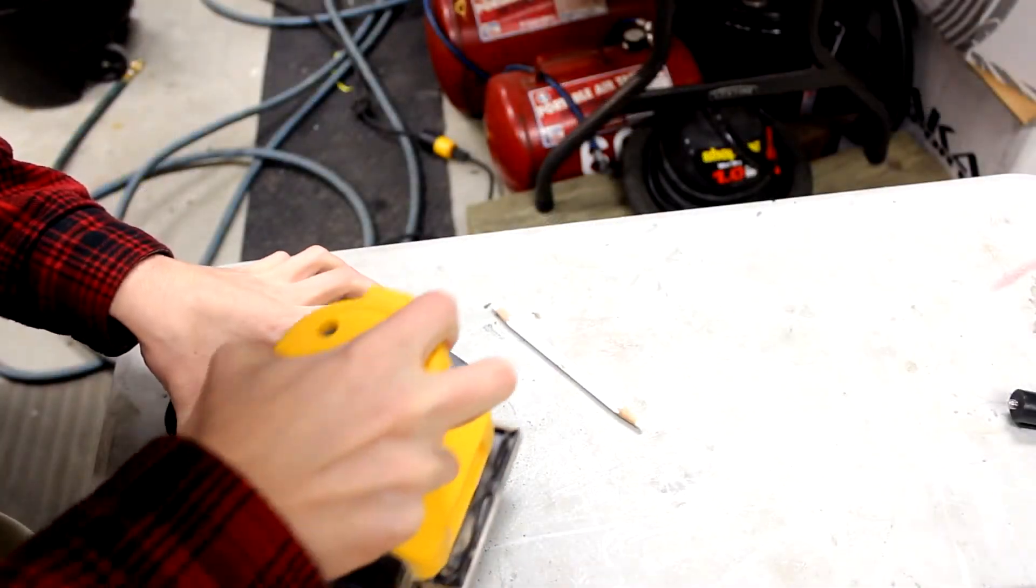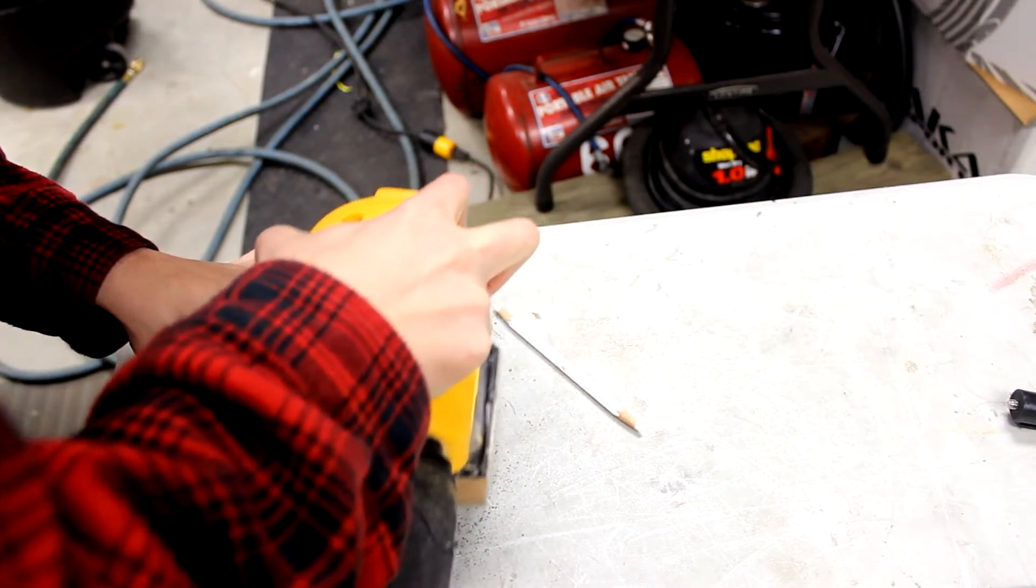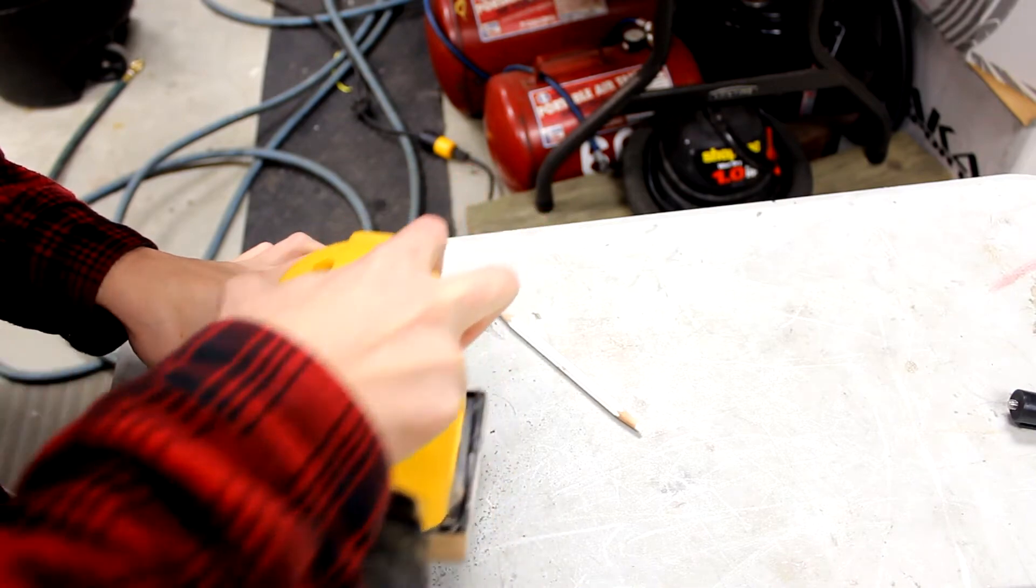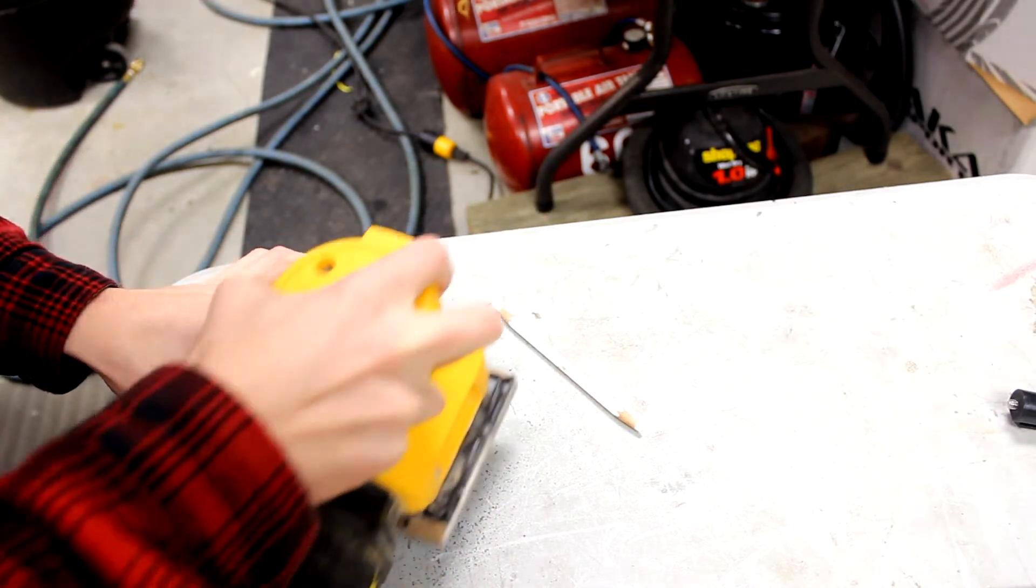The first thing that I did was use a palm sander with some fine sandpaper to sand off the surface of the trim. This removed that ugly clear coat and smoothed out the surface. Keep sanding it down until the old surface is removed and until your trim is completely smooth.